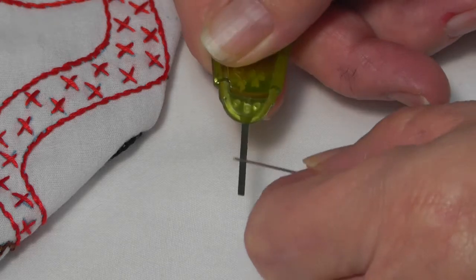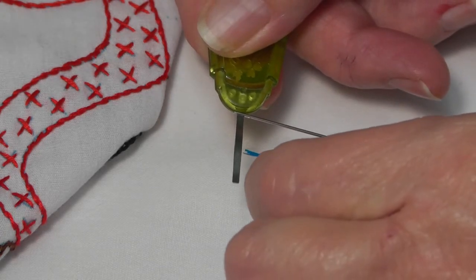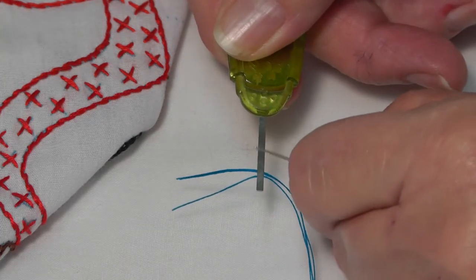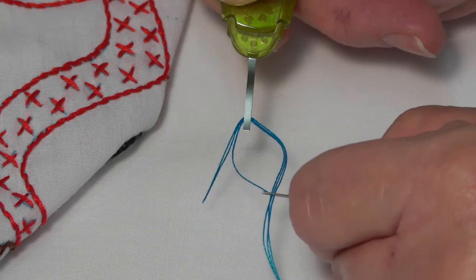Insert embroidery threader tip through the eye of your embroidery needle, then insert a couple inches of floss through the tip of the threader. Pull the threader straight back out of the needle.